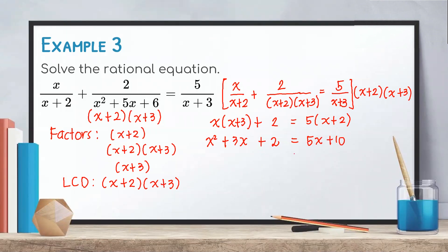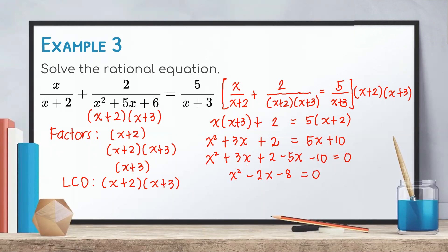Next, isolate all terms to the left side of the equation, giving us x squared plus 3x plus 2 minus 5x minus 10 equals 0. Combining similar terms gives us x squared minus 2x minus 8 equals 0. Notice that this is a quadratic equation, so we need to factor it. The factors are (x − 4)(x + 2).